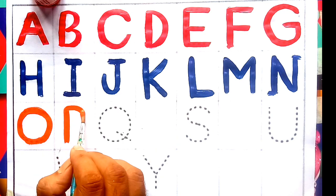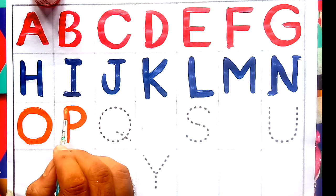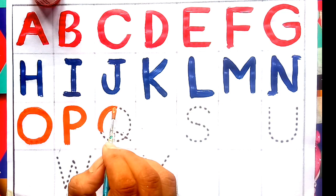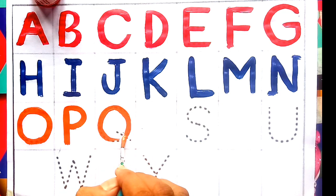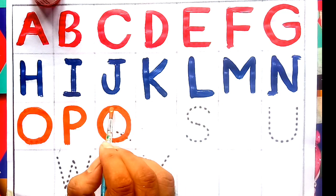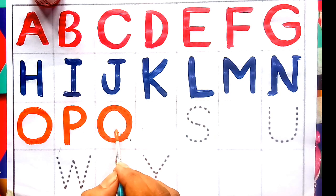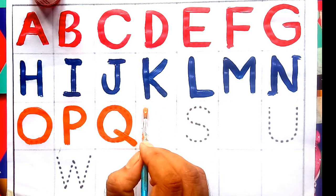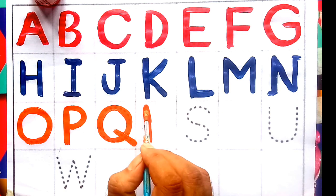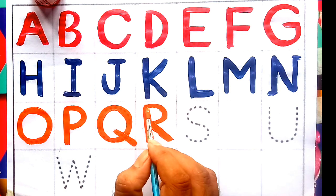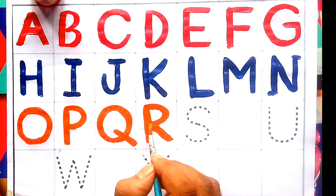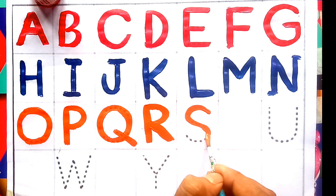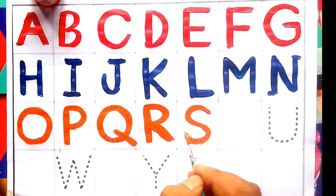P for pigeon, Q for queen, R for rose, S for sun.